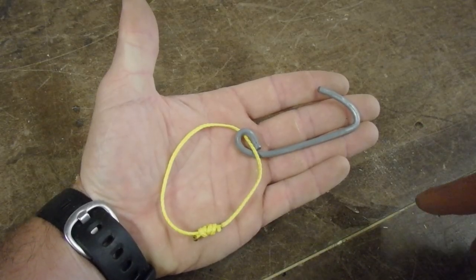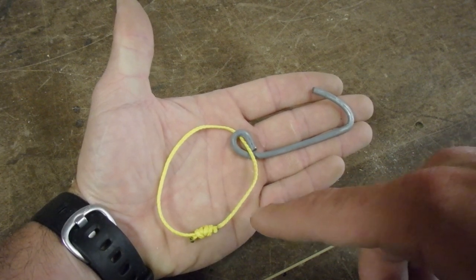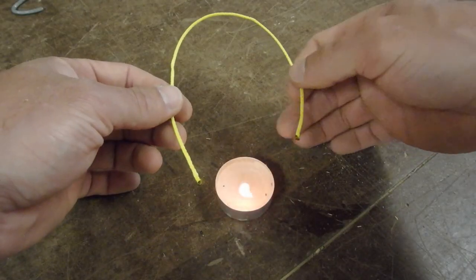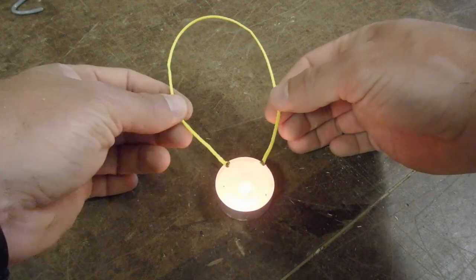Now the next thing we want to do is take our hooks and add a loop to them. So we're going to start by cutting our zingit into about 10 inch pieces. One piece for each hook. I like to light a candle when I'm going to be searing the ends of a lot of pieces of rope. It just makes it so much easier.